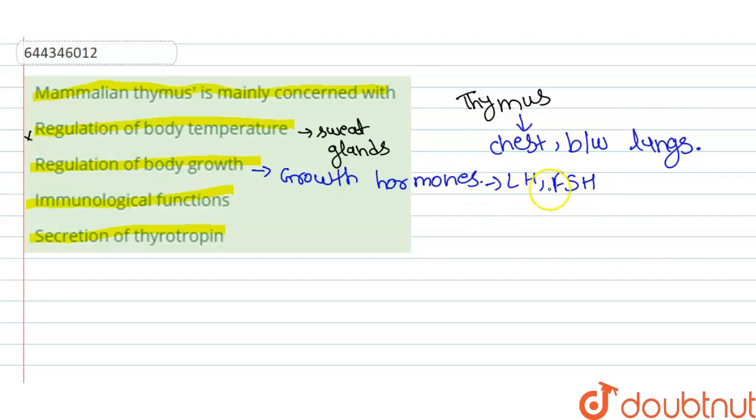And these hormones are secreted by pituitary gland, which means this option is also incorrect. Option C is immunological functions. This option is correct because thymus gland